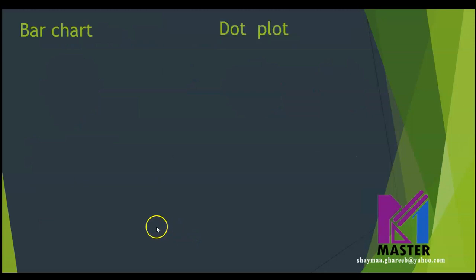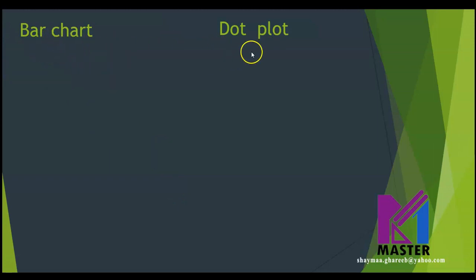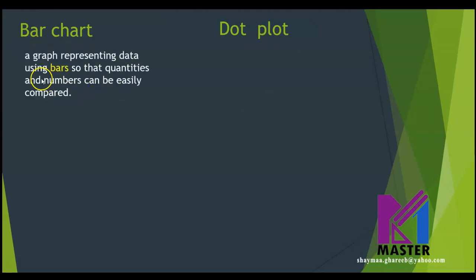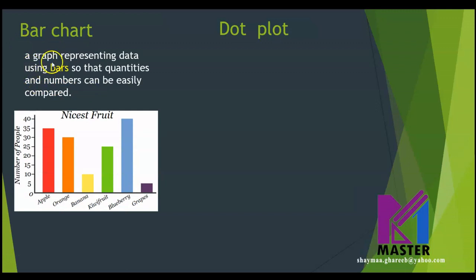Are you ready? Let's start. First, let's talk about two types of charts here: the bar chart and the dot plot. Let's start with the bar chart. The bar chart is a graph representing data using bars, as you can see here, so that the quantities and numbers can be easily compared.